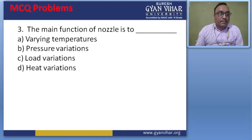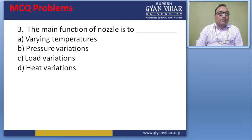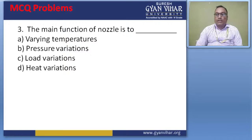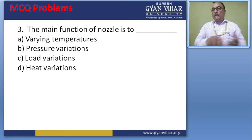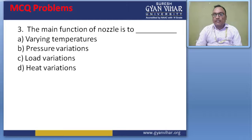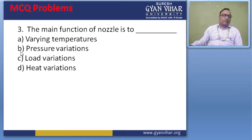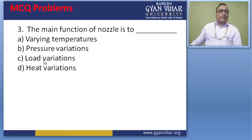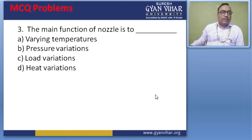Question 3: The main function of a nozzle is — (A) varying temperature, (B) pressure variation, (C) load variation, (D) heat variation. Answer: B — pressure variation. The nozzle is used to change pressure inside the flow. When fluid passes through the nozzle, it regulates pressure by opening and closing. So the correct answer is B, pressure variation.